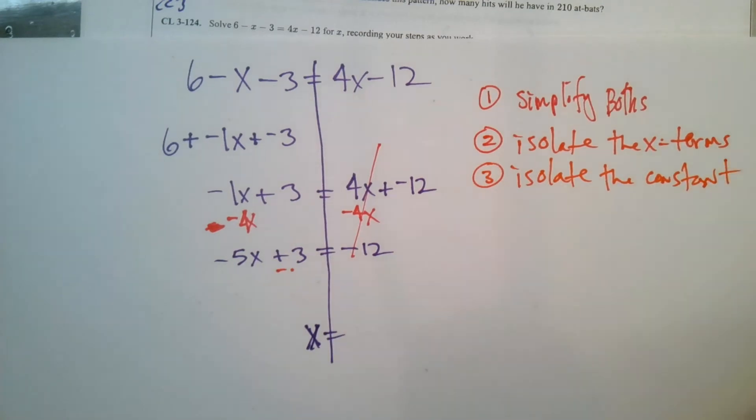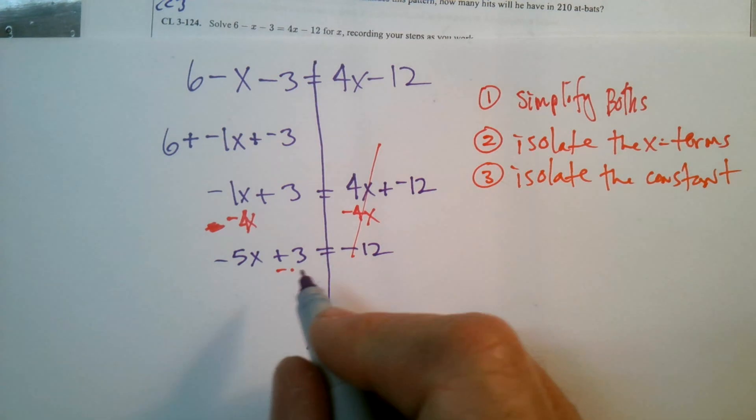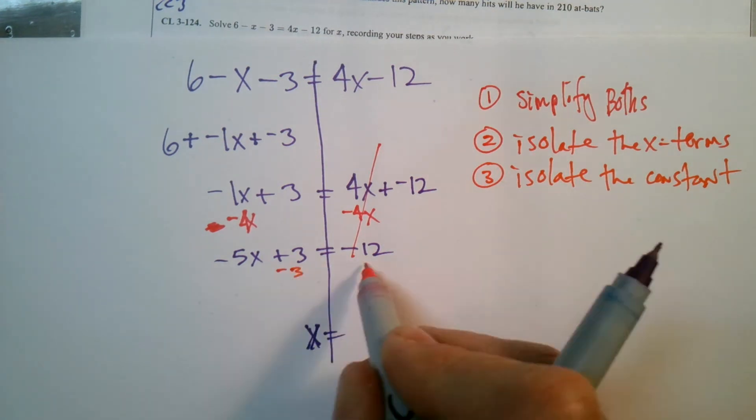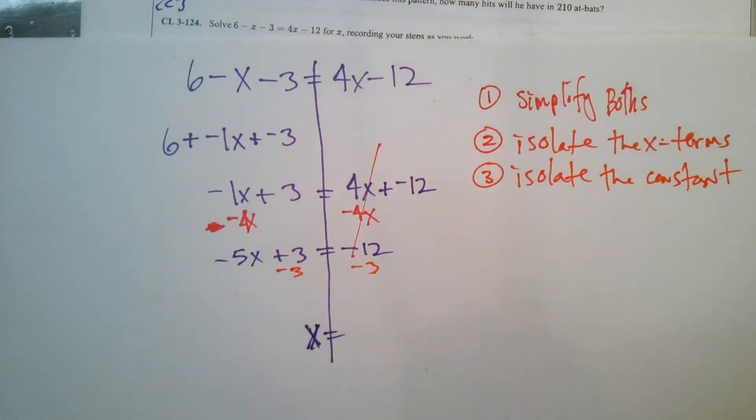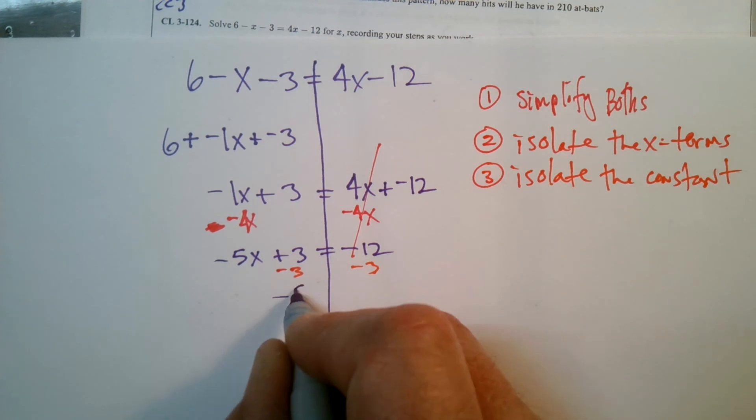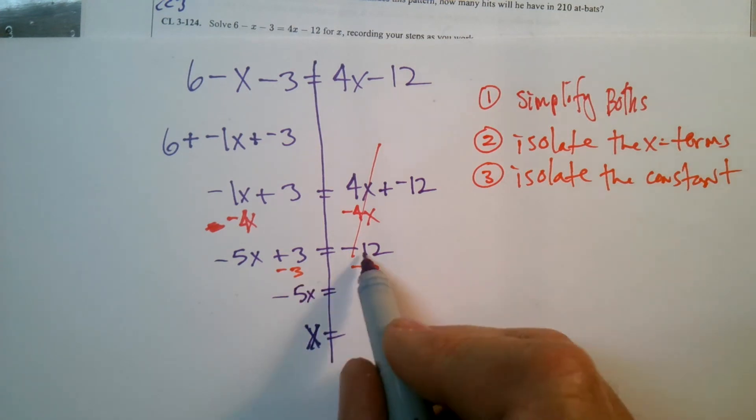So I'm going to subtract, as I was doing, subtract 3 from both sides. So I have negative 5X is equal to negative 12 and negative 3 is negative 15.